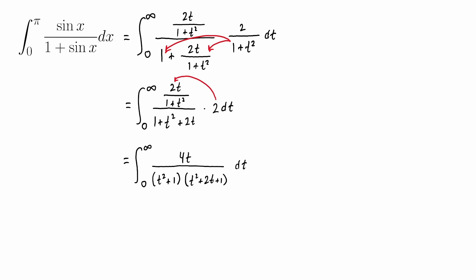And if you notice, you can rewrite that other factor in the denominator as a perfect square. So we get as our simplified rational function, 4t divided by t squared plus 1 times t plus 1 squared. And at this point, it's just a matter of going through a straightforward partial fraction decomposition.